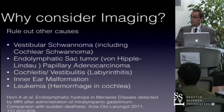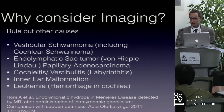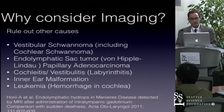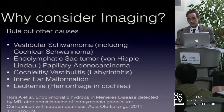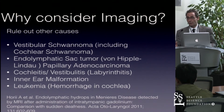Why consider imaging? We want to rule out vestibular schwannoma or cochlear schwannoma, endolymphatic sac tumors, or look at the labyrinth for cochleitis, vestibulitis, or inner ear malformation, and also hemorrhage in the cochlea — for instance, leukemia. There is a study from Professor Hori from Japan who in 2011 injected transtympanic gadolinium into the ear, brought Meniere's patients and sudden hearing loss patients back 24 hours later, and was able to demonstrate endolymphatic hydrops on MRI imaging.